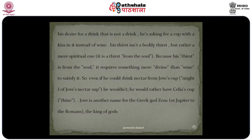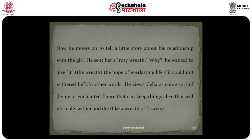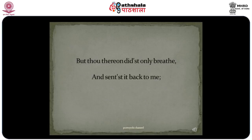So even if he could drink nectar from Jove's cup — 'might I of Jove's nectar sup' — he wouldn't; he would rather have Celia's cup. Jove is another name for the Greek god Zeus, or Jupiter to the Romans, the king of gods. 'I sent thee late a rosy wreath, not so much honouring thee as giving it a hope that there it could not withered be.' Now he moves on to tell a little story about his relationship with the girl — he sent her a rosy wreath, wanting to give it the hope of everlasting life. He views Celia as a divine or enchanted figure that can keep things alive that would normally wither and die, like a wreath of flowers.